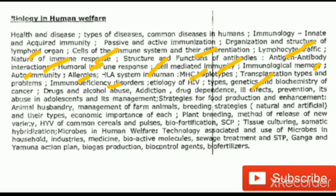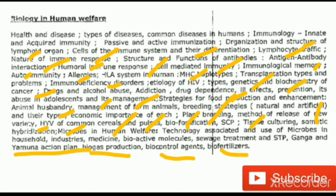Continuing biology in human welfare: prevention of drug abuse, its management in adolescents, strategies for food production and enhancement, animal husbandry, management of farm animals, breeding strategies — natural and artificial — economic importance, plant breeding methods, release of new varieties of common cereals and pulses, bio-fortification, single cell protein, tissue culture, somatic hybridization, microbes in human welfare — use of microbes in household products, industries, medicine, bioactive molecules, sewage treatment and STP, Ganga and Yamuna action plans, biogas production, biocontrol agents, and bio-fertilizers.